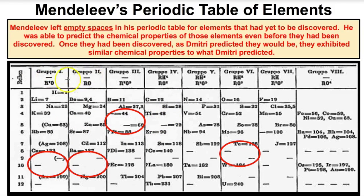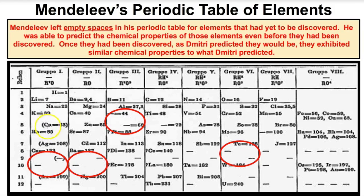As you can see, we have group one, group two. Groups are the vertical columns on the periodic table. Dmitry Mendeleev says that if you're in the same group — like lithium, sodium, potassium, and rubidium — then you're going to have very similar chemical properties as well as some similar physical properties.